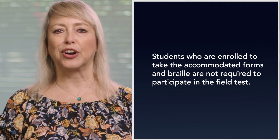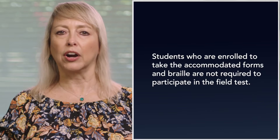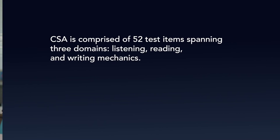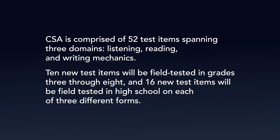Students enrolled to take the accommodated forms and Braille aren't required to participate in the field test. The 2024 CSA is comprised of 52 items spanning three domains: listening, reading, and writing mechanics. In addition, 10 new test items will be field tested in grades 3 through 8 and 16 items in high school on each of three different forms.